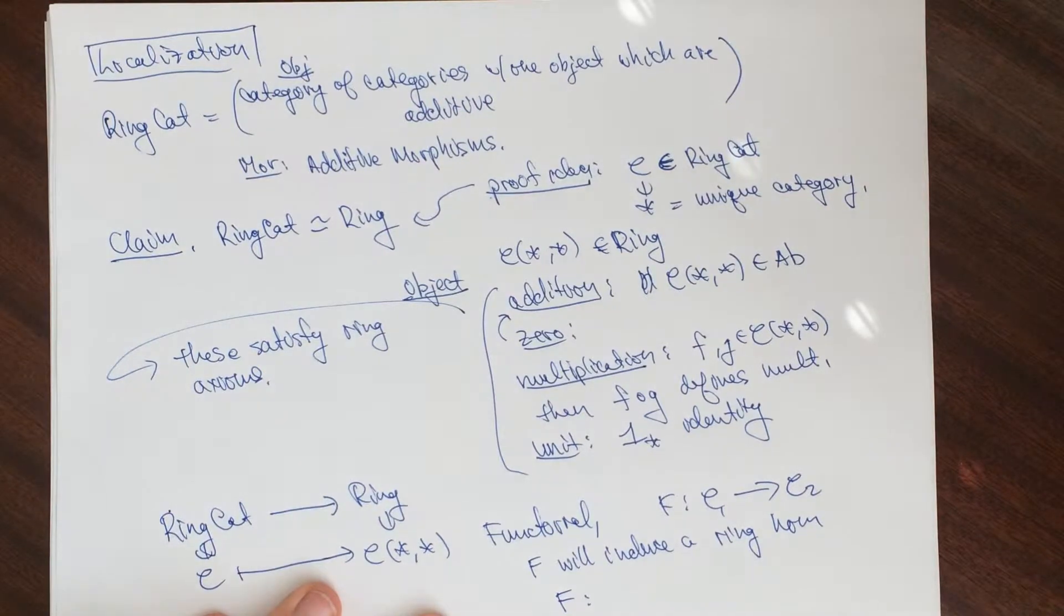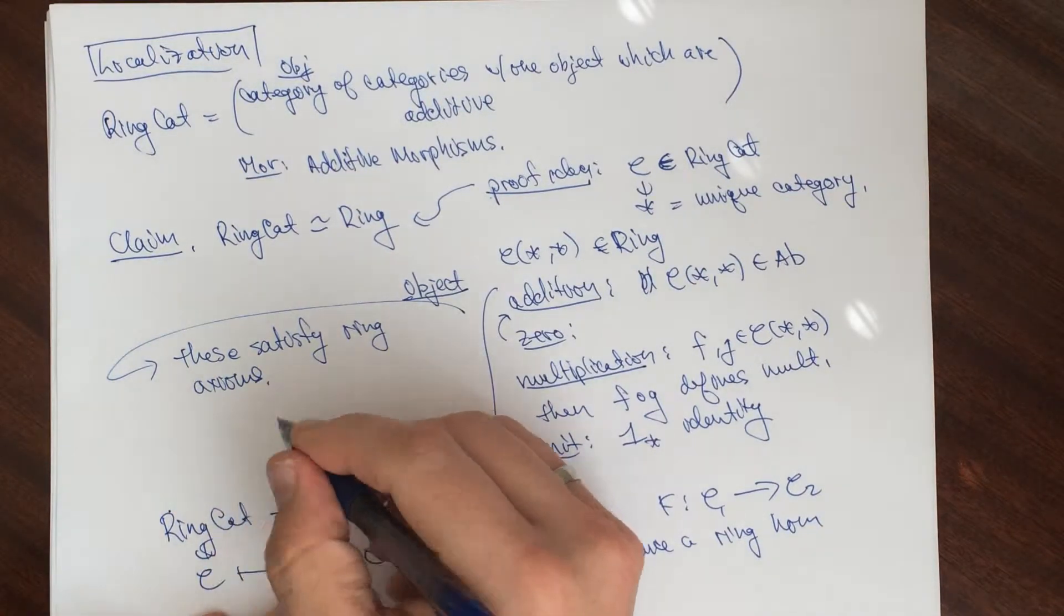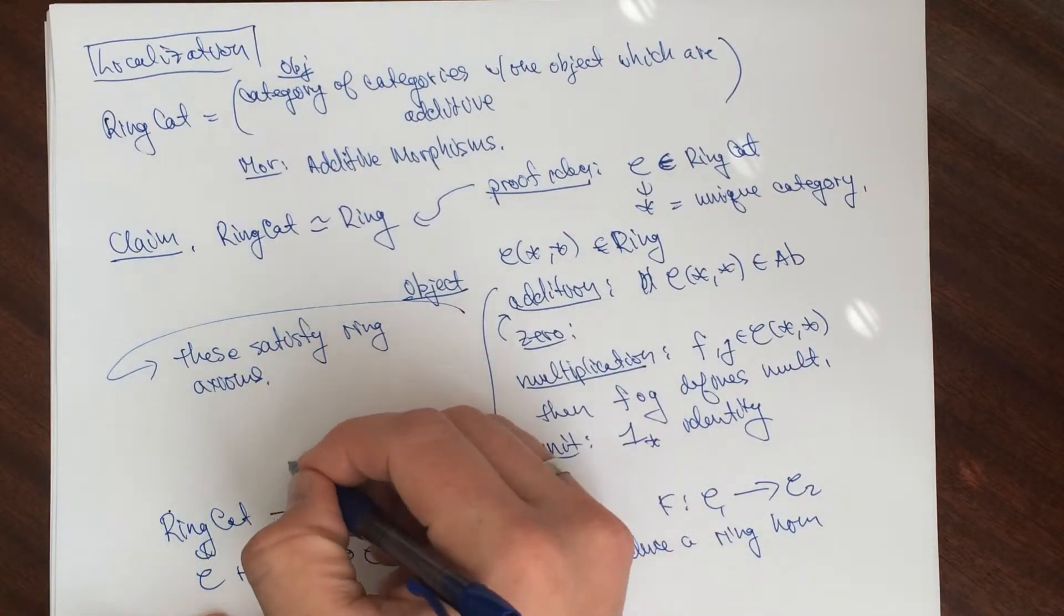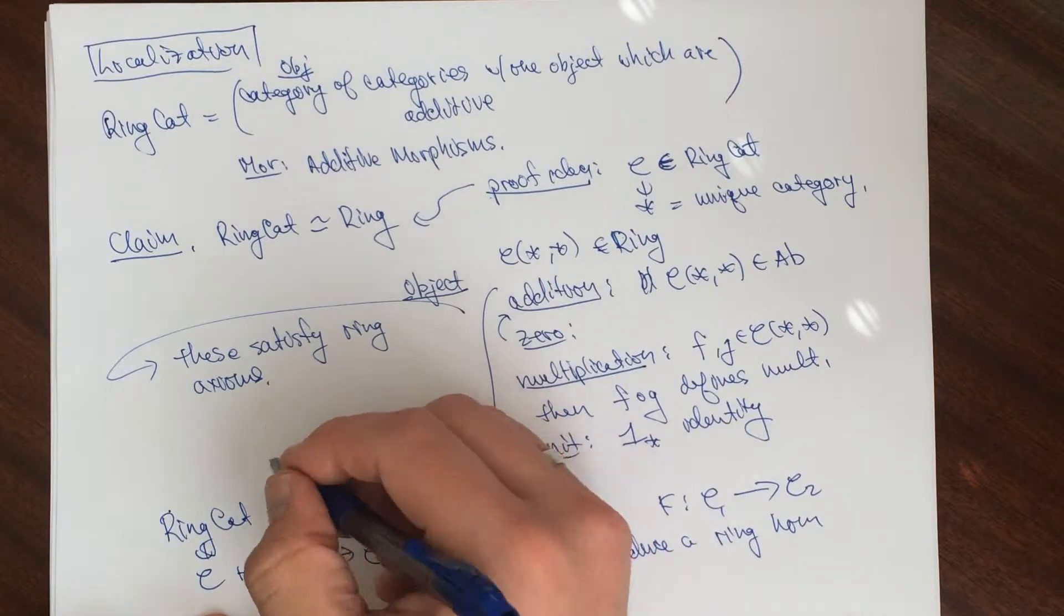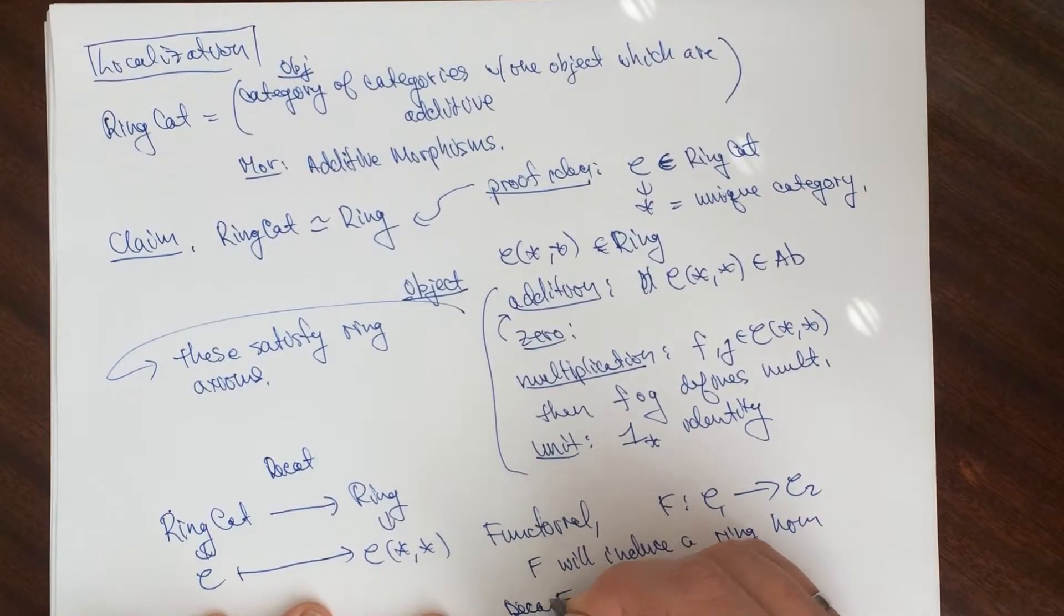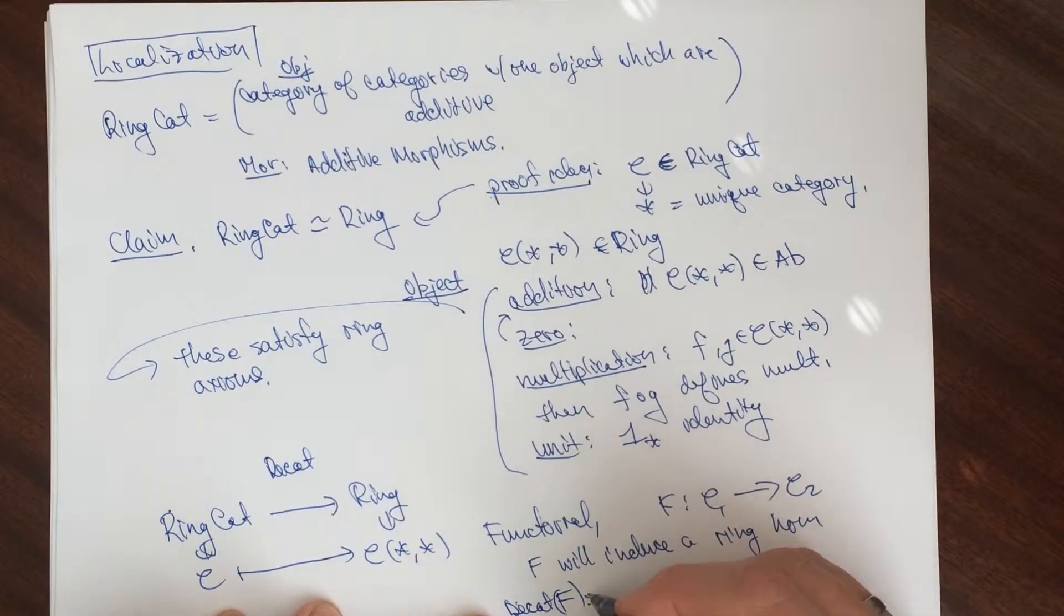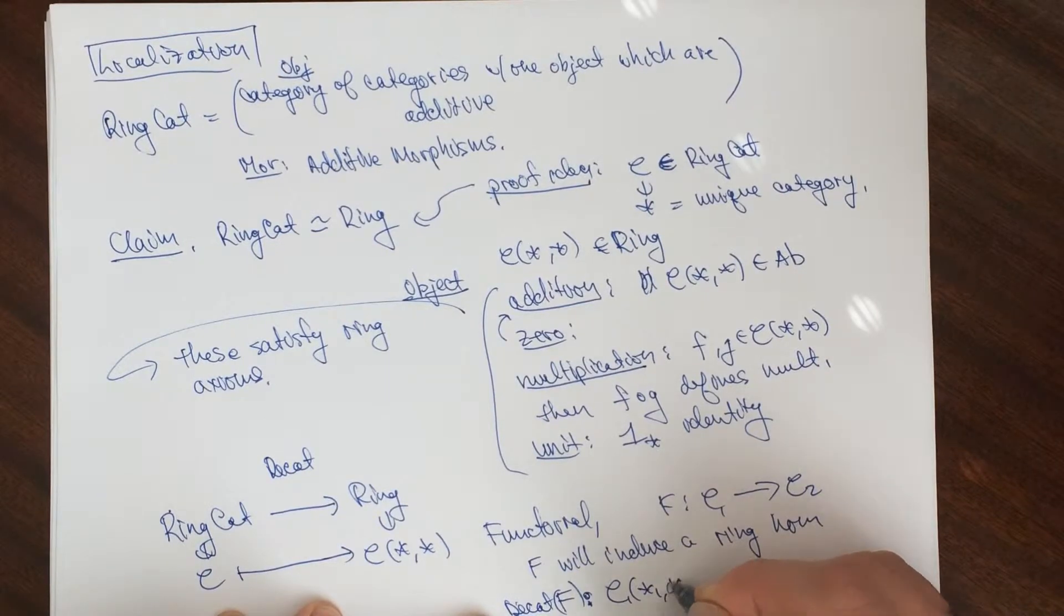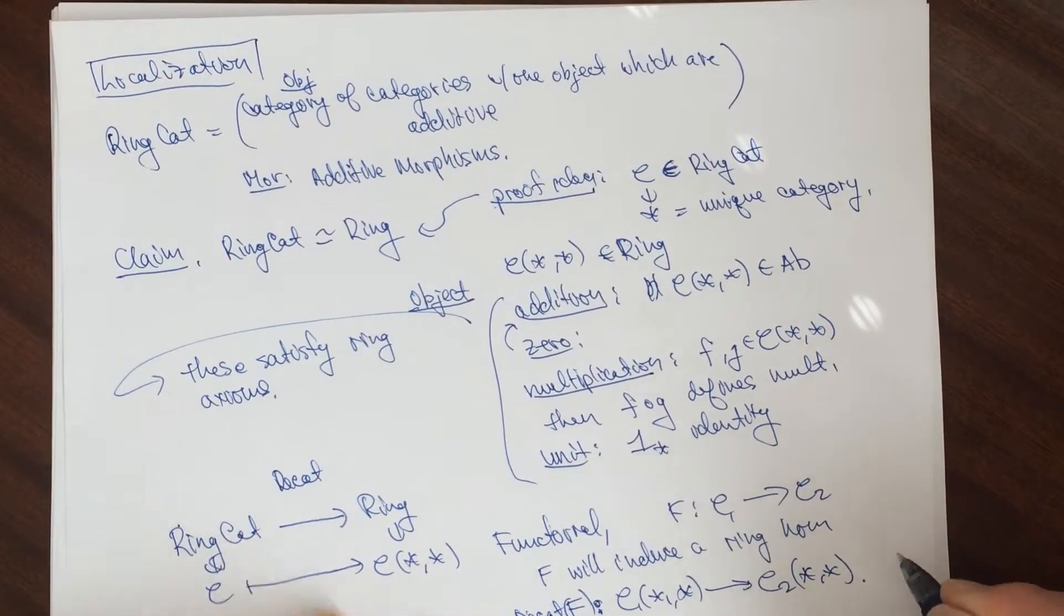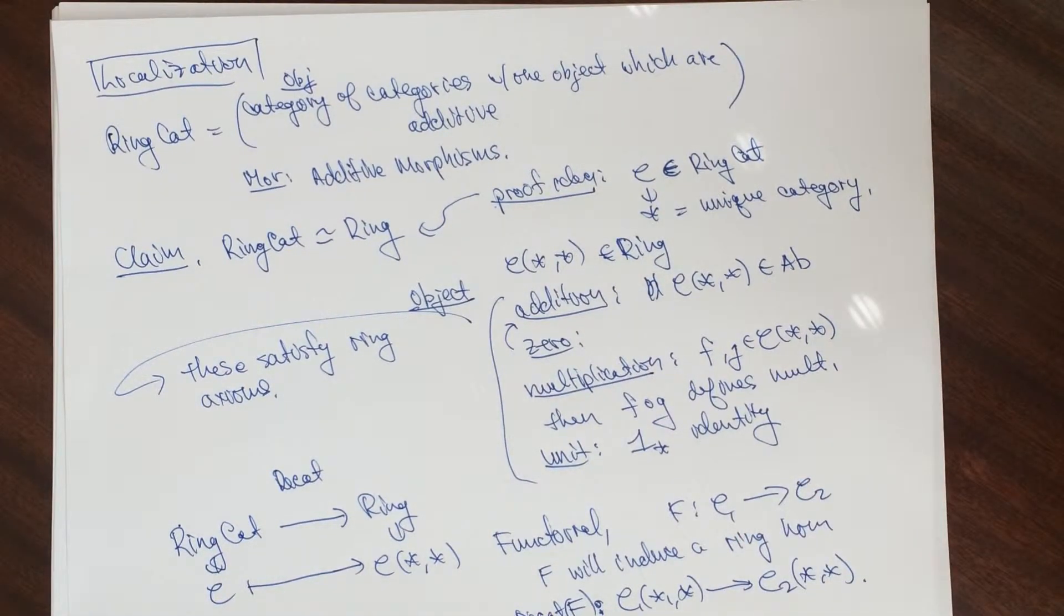Maybe we should call this something. Take ring. Decategorify. Decat F is going to be, we're going to get ring homomorphism from C1 to C2.